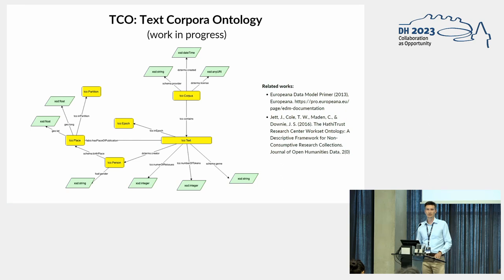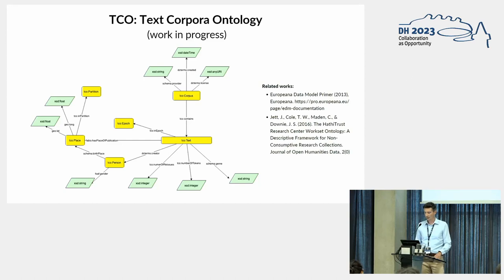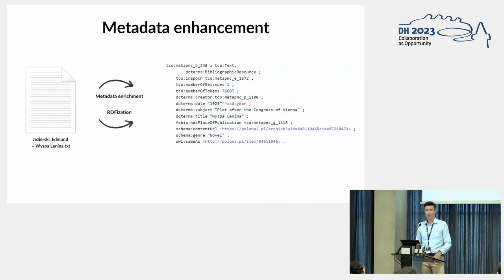The basic issue is how to make research-specific metadata easily comprehensible. We believe the answer is TCO — Text Corpora Ontology. It's currently a work in progress, but we've already used it for our literary corpus, and we believe other researchers may be interested in co-developing this ontology. There are several similar activities worth mentioning, such as the Europeana Data Model and the HathiTrust Research Center's work on ontology, but TCO has slightly different goals. The main question is how to properly enhance your metadata — how to transform a plain TXT file with very limited information into a structure that is well understood by other researchers.